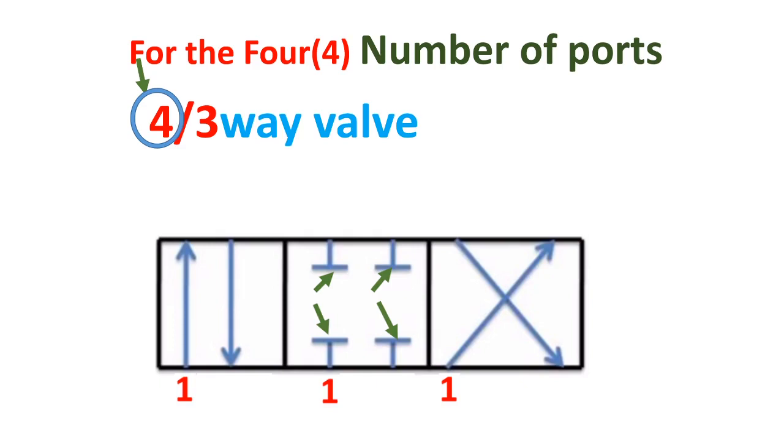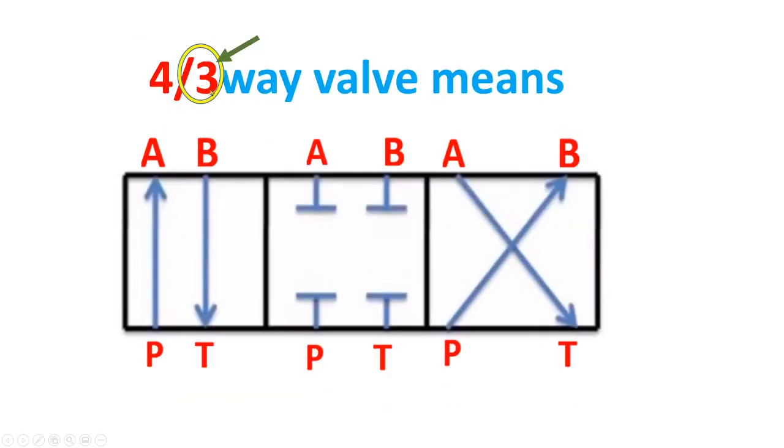This is port number one, port number two, port number three and port number four. And the three means number of switching positions or boxes.